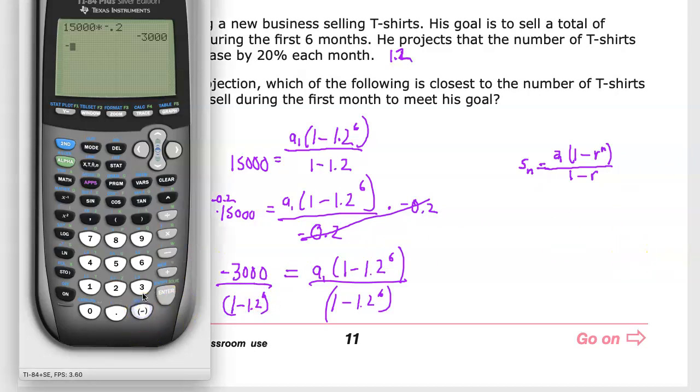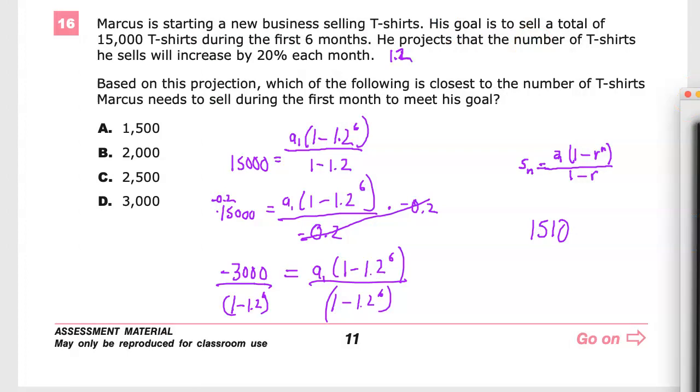So I'm going to do negative 3,000 here. And then I'm going to divide by 1 minus 1.2 raised to the 6th power because there are 6 months here. I'm also going to hit the directional pad to the right here so I'm not putting the parentheses after the exponent. And it gives me 1,510.